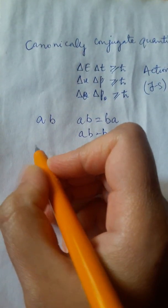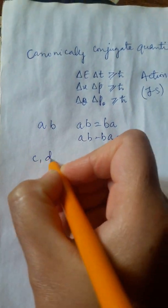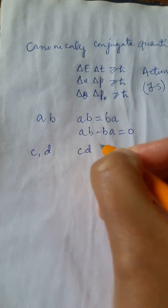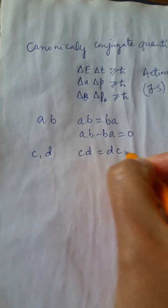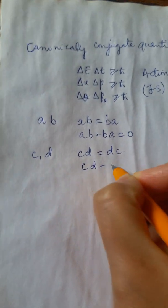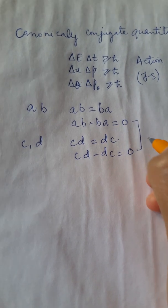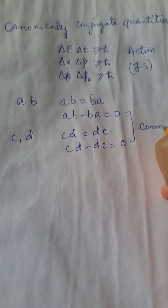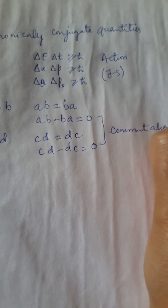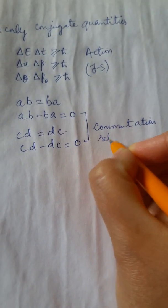Similarly, if you have a pair of complex numbers, say C and D, their product CD is equal to same thing as DC. So that CD minus DC is equal to 0. These types of relations are called as commutation relations. So I write for them that these are commutation relations.